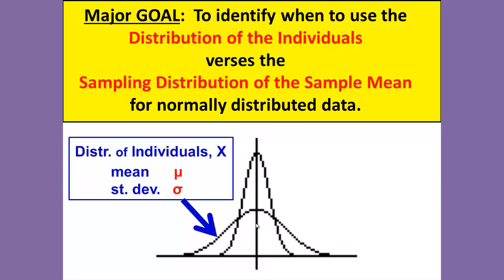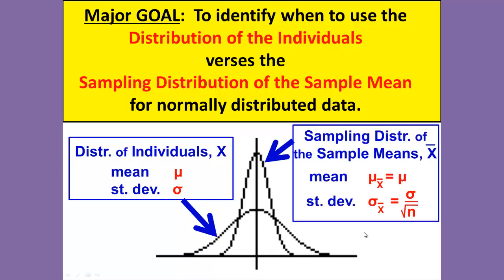We're looking at the distribution of individuals where we examine a single data point, score, or person — an individual — versus when we look at a sample and examine the sample mean of that sample. That's the sampling distribution of the sample means, or x-bar. When we look at that, the mean stays the same but the standard deviation is adjusted by taking the population standard deviation sigma and dividing by the square root of n.